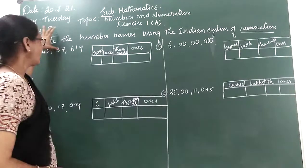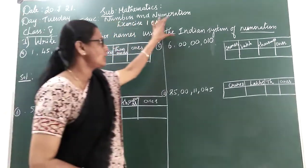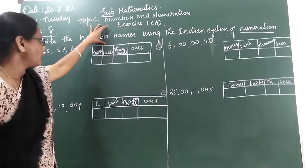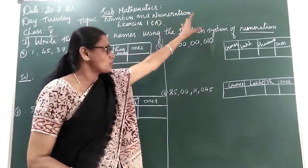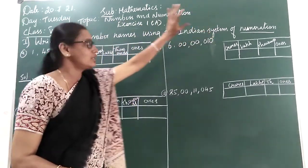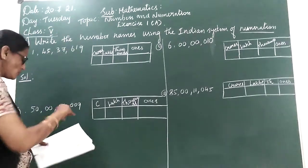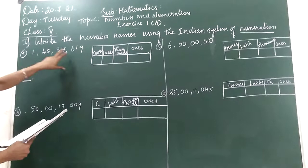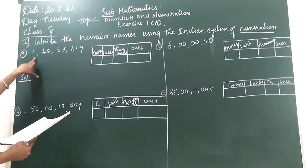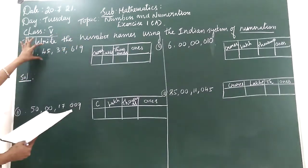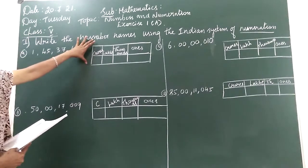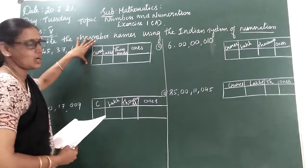First question is write the number names using the Indian system of numeration. Okay children, so the first question given is, see children number is given. You have to write the number in number names. For this you have to write the place value chart.